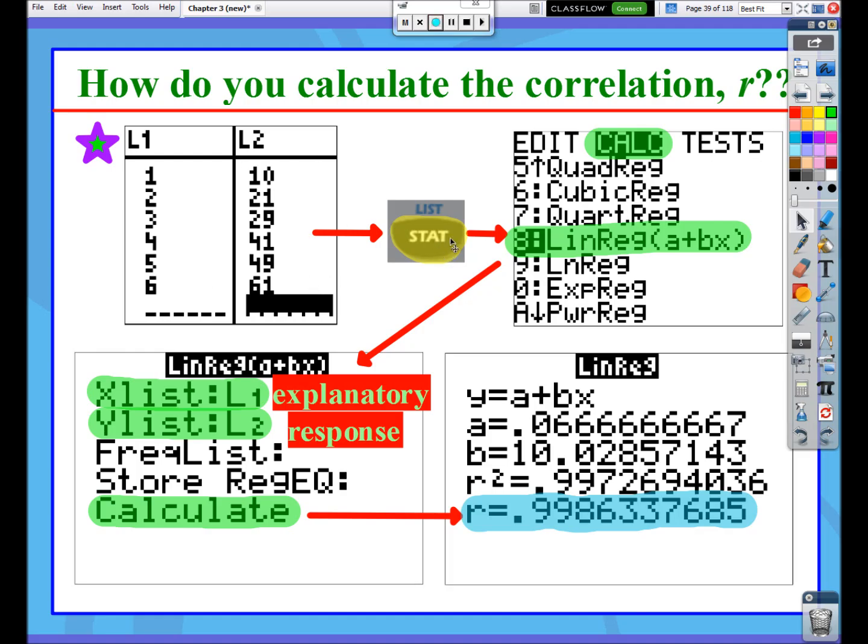So once you've got that into your list in your calculator, then you're going to press the Stat button, but you're going to move over to the Calc feature. And then we're going to go down to option number 8, LinReg A plus BX. And one thing you might notice, I don't have it on the screen here, but number 4, what's right above the QuadReg, number 4 also says LinReg.